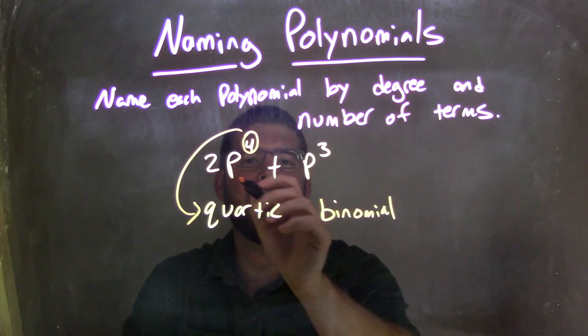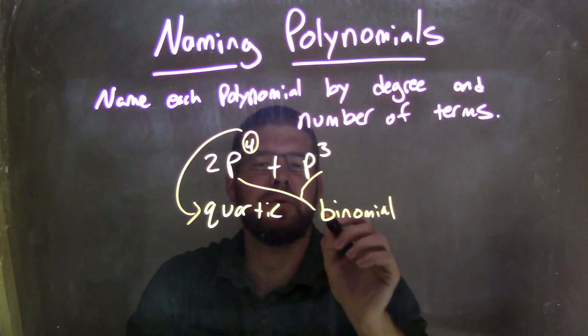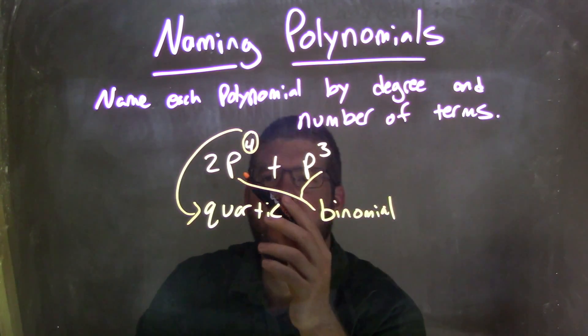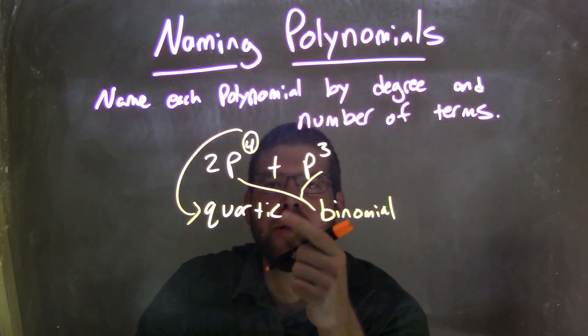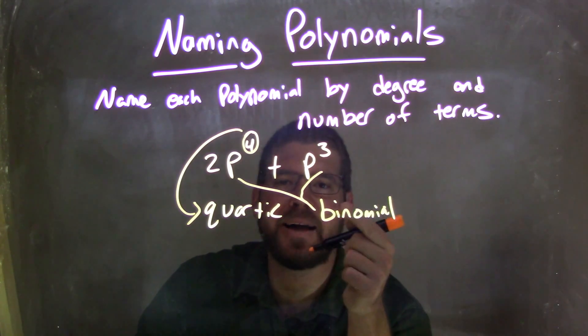And then a binomial is given to me from these two parts. Our two parts: 2p to the 4th and the other part p to the 3rd, separated by the plus sign. So our final answer here is this is a quartic binomial.